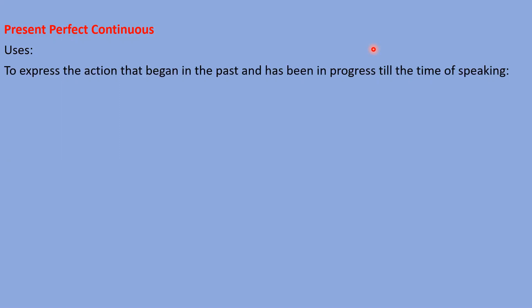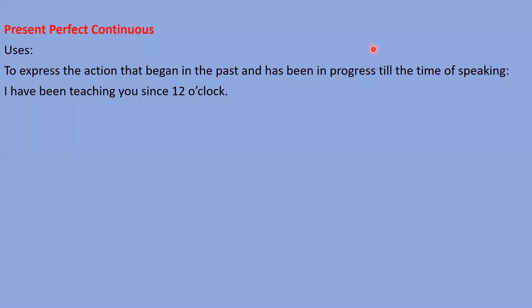To express the action that began in the past and has been in progress till the time of speaking. For example: 'I have been teaching you since 12 o'clock.' Simply, you have to understand: when any action is going on from a definite or indefinite time, for that action we should use present perfect continuous tense.